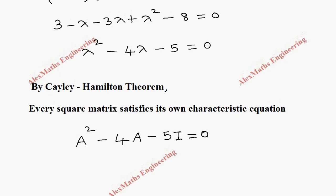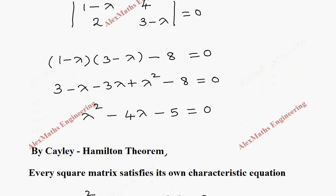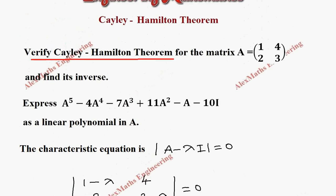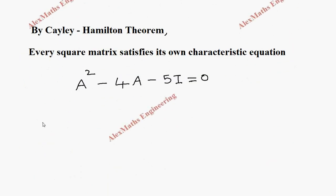Now we have to prove this expression, so for that we need A squared. In the question, they have given A with elements 1, 4, 2, 3. So let's find A squared. A squared is A into A.